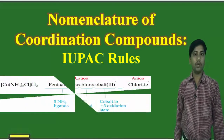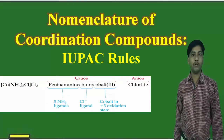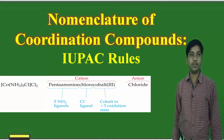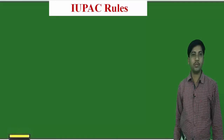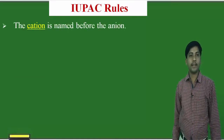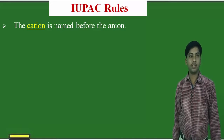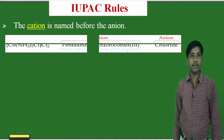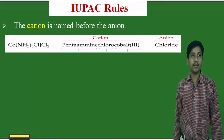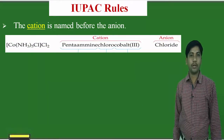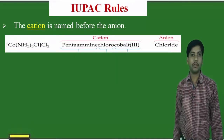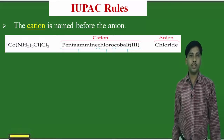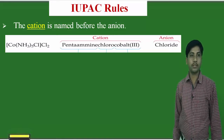How to give the name to coordination compounds according to the IUPAC rules. The first rule is: the cation is named before the anion. In this example, we can observe that the cation is the pentaamminechloro cobalt, which is named first, and then the anionic part, that is Cl (chloride), is named next.